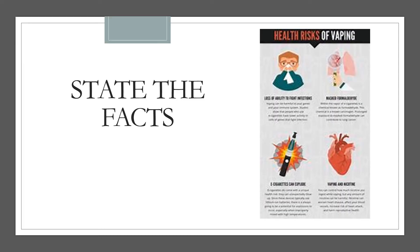The next two strategies provide you with an opportunity to refuse peer pressure while at the same time encouraging your peers to make healthy decisions. You can encourage the other person to do something positive rather than something negative — try to reverse the negative into a positive. The first one is called state the facts: tell the person pressuring you the possible negative consequences of doing what he or she wants to do.